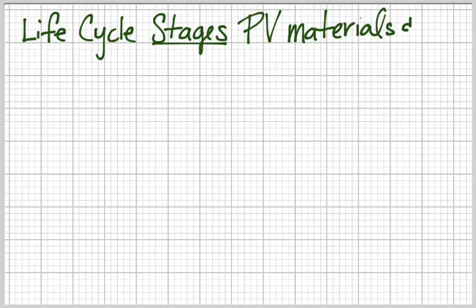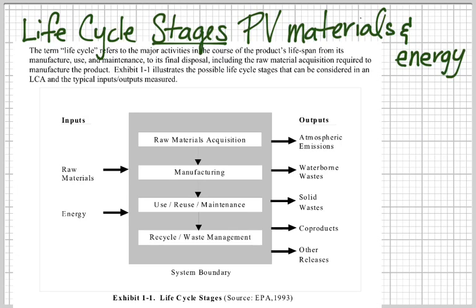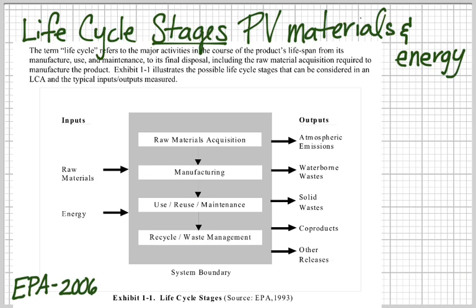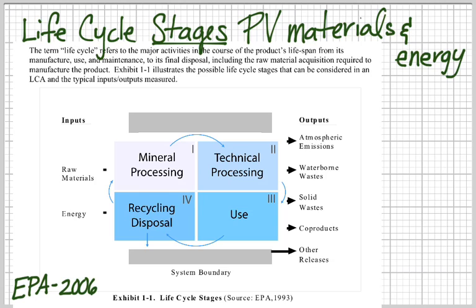In this case we're going to think about PV photovoltaic materials and energy flows. Here you see from the EPA — this is a 2006 document — that the life cycle is the whole lifespan of a product. That would be from raw materials acquisition, which is a stage, to manufacturing, to use of the material like the photovoltaic panel, to the disposal or recycling of the panel. We can simplify that and look at stages of a photovoltaic module as having a simple cycle from mineral processing to technical processing, to modules, to use, and then recycle or disposal.